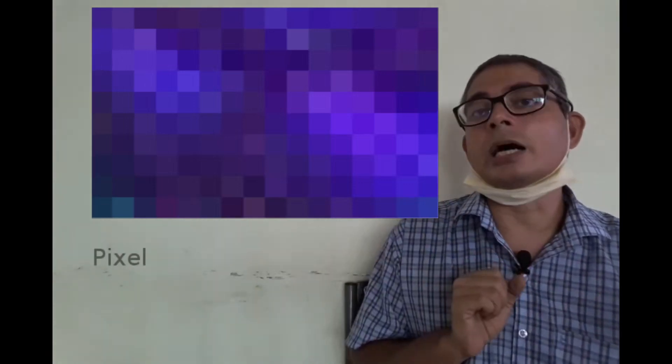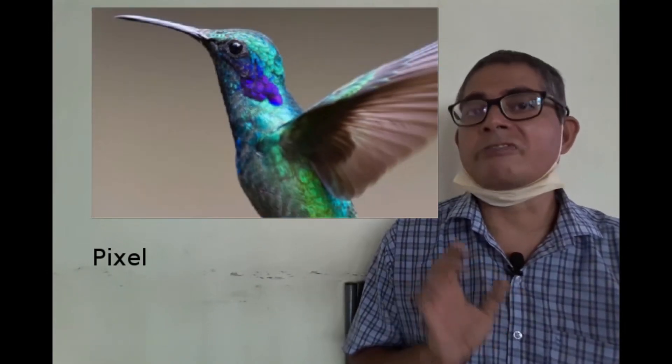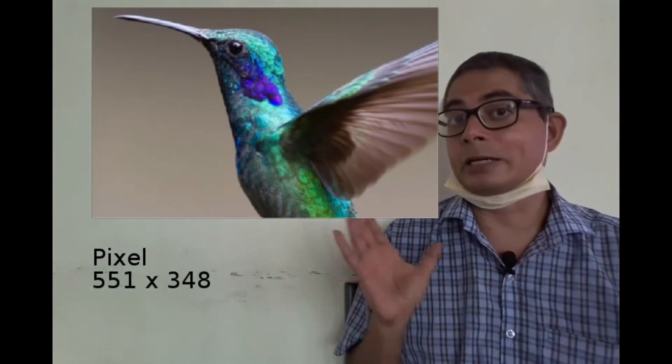These tiles are called pixels. Here the original image was 551 by 348. That is, it is a matrix of pixels,